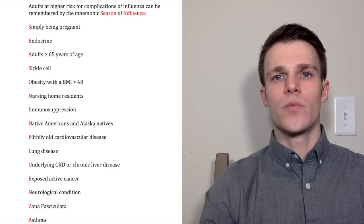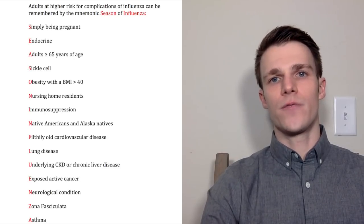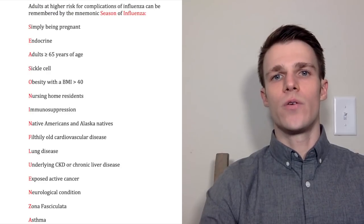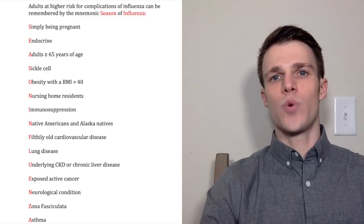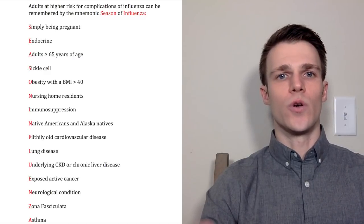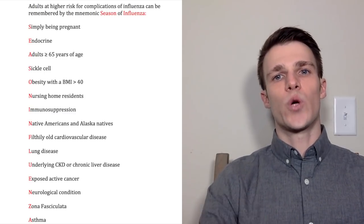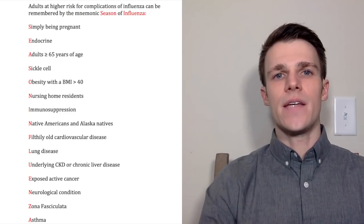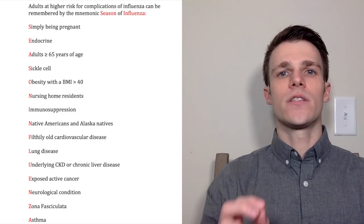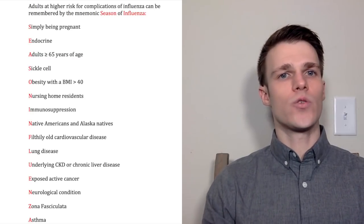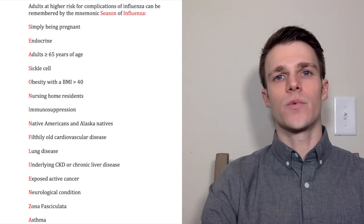Z stands for zona fasciculata - the middle layer of the adrenal cortex stimulated by ACTH from the anterior pituitary to produce glucocorticoids. So we need to ask our patients if they're taking exogenous glucocorticosteroids such as prednisone that could suppress the immune system. A stands for asthma, particularly if systemic glucocorticosteroids were prescribed in the past year, suggesting poorly controlled or severe underlying asthma. To be complete, ask about surgical history, tobacco abuse, alcohol abuse, illicit drug use, and their living situation.